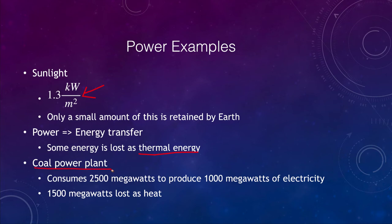And here is another example of that. A coal power plant can consume 2500 megawatts to produce 1000 megawatts of electricity. So that's less than 50% efficiency. 1500 megawatts is lost as heat. So remember, there are things that are more efficient, things that are less efficient, and so it just depends on the exact details of that object.